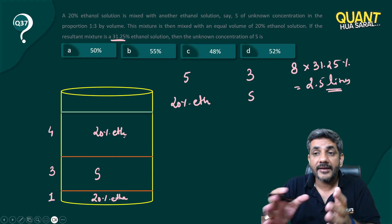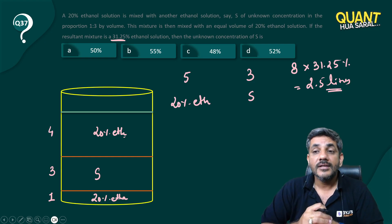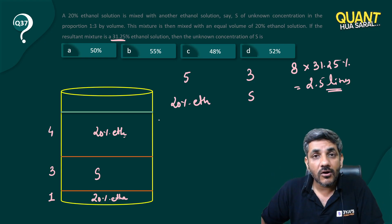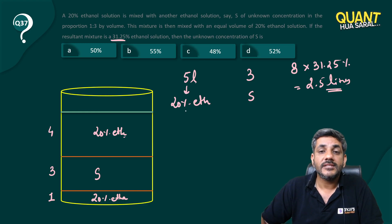But 5 parts—5 liters—have 20% ethanol, which means 1 liter of ethanol came from these 5 liters. The remaining 1.5 liters of ethanol came from S.